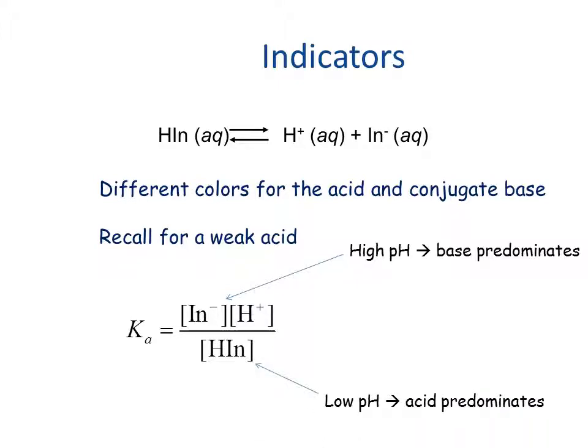Conversely, if we have a low pH, then the acid form is what predominates, as the concentration of H+ is high. So in order to maintain this fraction, we need a large number here.